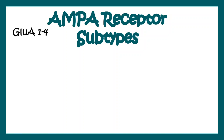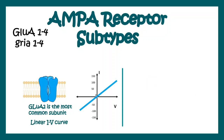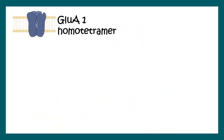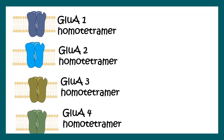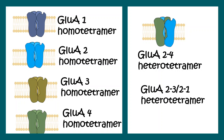AMPA receptor subunits are known as GluA1 to GluA4, encoded by the GRIA1–4 genes. The most common subunit is GluA2, which produces the typical linear IV curve. AMPA receptors lacking GluA2 show an inward-rectifying profile, conducting current only in the inward direction. These channels can form homotetramers (GluA1, GluA2, GluA3, or GluA4 alone) or heterotetramers. In heterotetramers, at least one subunit must be GluA2 — for example, GluA2/4, GluA2/3, or GluA2/1 combinations. A GluA1/3 heterotetramer is generally not found.